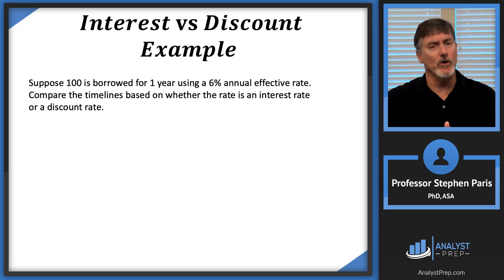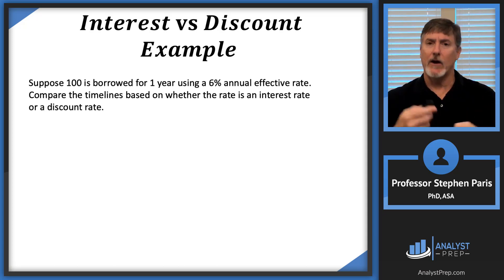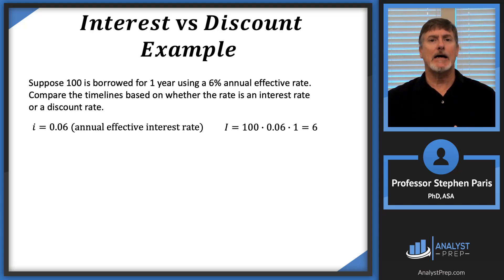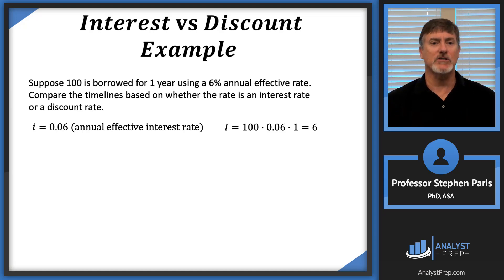When you say the word 'rate,' it's kind of ambiguous — you need some adjectives to back that up. In this case there's the period (annual), it's effective, and now I need another adjective: is it an interest rate or a discount rate? Let's start with an interest rate. Let's say I is 6% — an annual effective interest rate. Then the amount of interest for that one-year period will be principal times rate times time: 100 × 0.06 × 1 = 6.